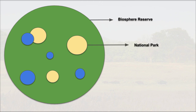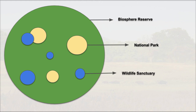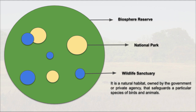The light yellow circle you can assume as a national park. National parks are notified areas covering a good extent, with very high levels of restrictions — very limited activities are allowed and the general public is not permitted. The blue area you can assume as a wildlife sanctuary. A wildlife sanctuary is a place where natural habitat protects a particular species — like the great Indian bustard, elephant, or lion — whereas national parks and biosphere reserves protect the ecosystem as a whole.